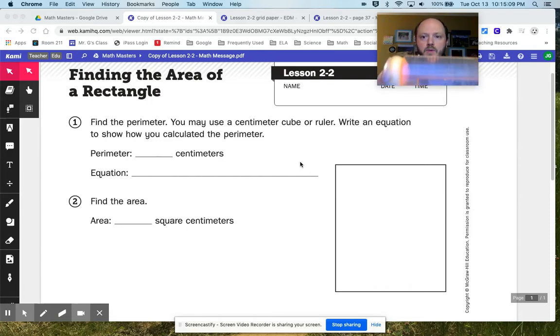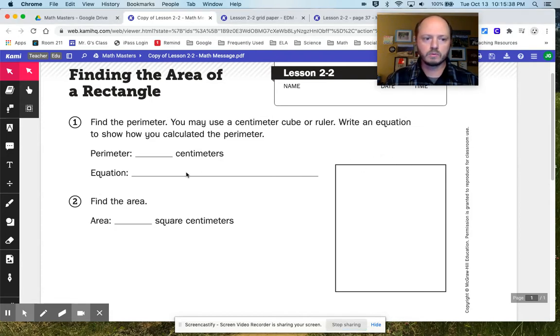And the important piece is measuring starting at that zero, not at the very edge of a ruler, but at the zero mark. Okay, so we see that there. Now, every ruler is a little bit different, but most of them now have a zero mark where you should be starting.